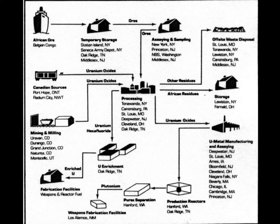This is a chart of the early US nuclear infrastructure program. It starts with ore from the Belgian Congo and Canadian sources — Port Hope and Radium City in the Northwest Territories. The US had a couple of mining sites of their own in different states. These were sent as uranium oxides from the American and Canadian sources for processing. The Belgian ore went to temporary storage, then was assayed at different locations and also sent to processing. In the processing, there were some residues left over and there was waste disposal.